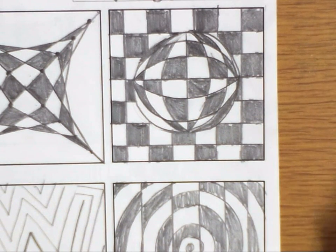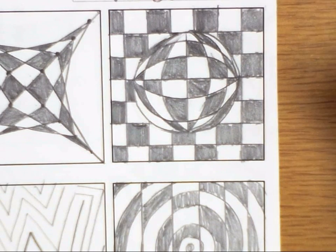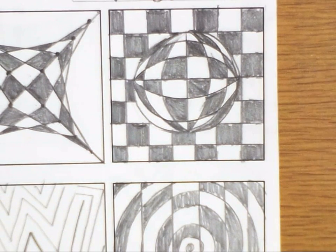This illusion is called the sphere. We start with a circle, which is flat, and we're going to add lines to it to make it look more three-dimensional, like a sphere.